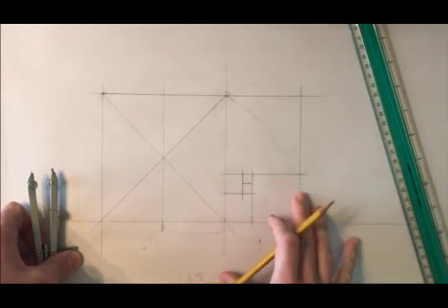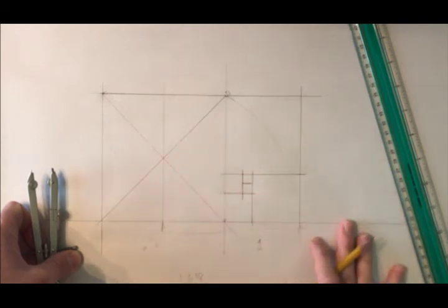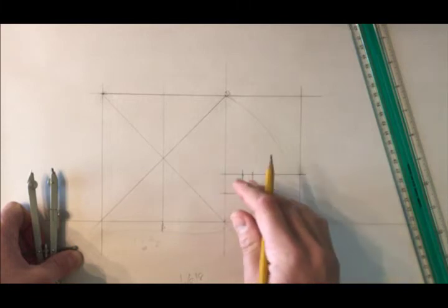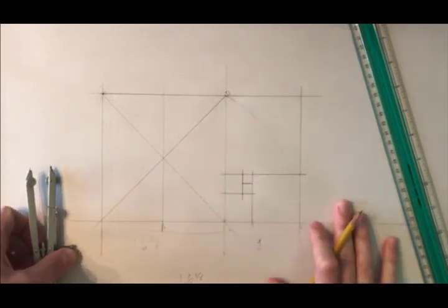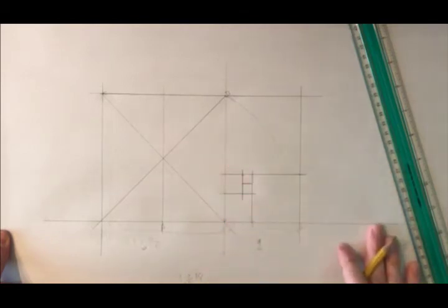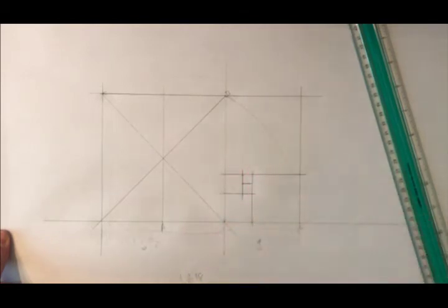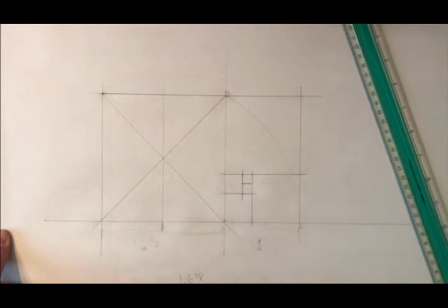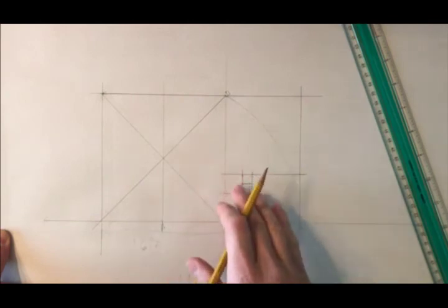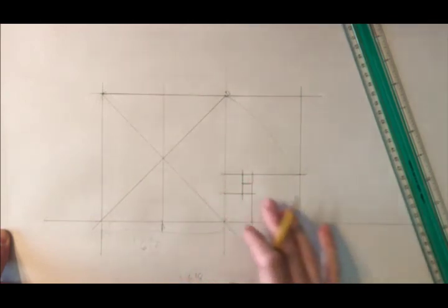This is where the Fibonacci sequence and the golden rectangle or golden ratio kind of coincide. You might know the Fibonacci sequence from things like sunflower growth or oftentimes people conflate the Fibonacci sequence with a golden ratio. They're very similar. They're not exactly the same. Whereas the golden ratio is this 1.618 and it will continue infinitely smaller, the Fibonacci sequence starts with a series of numbers.